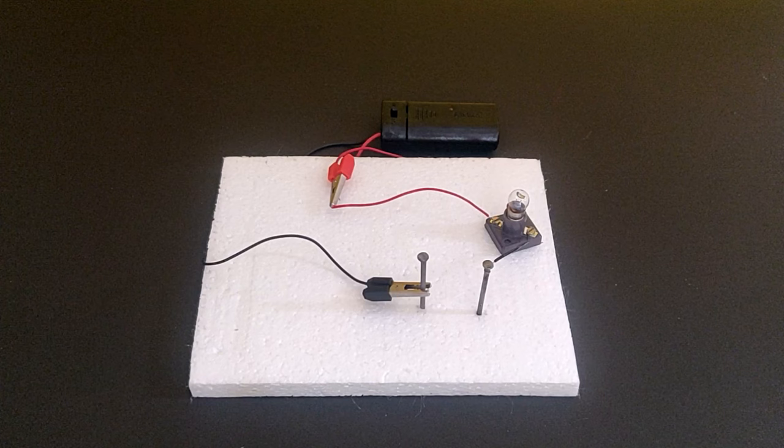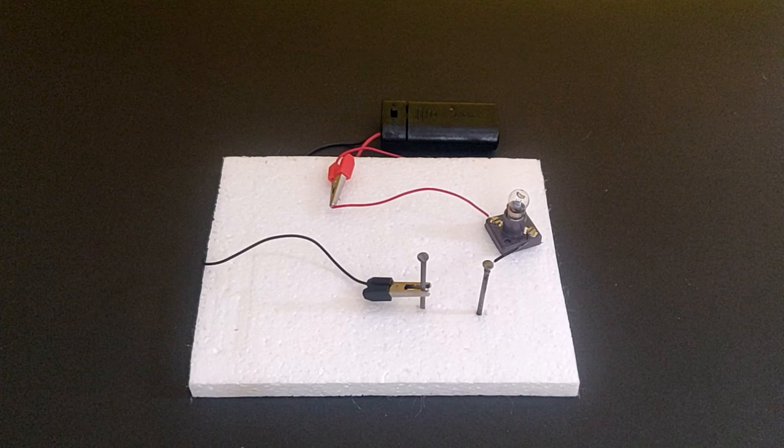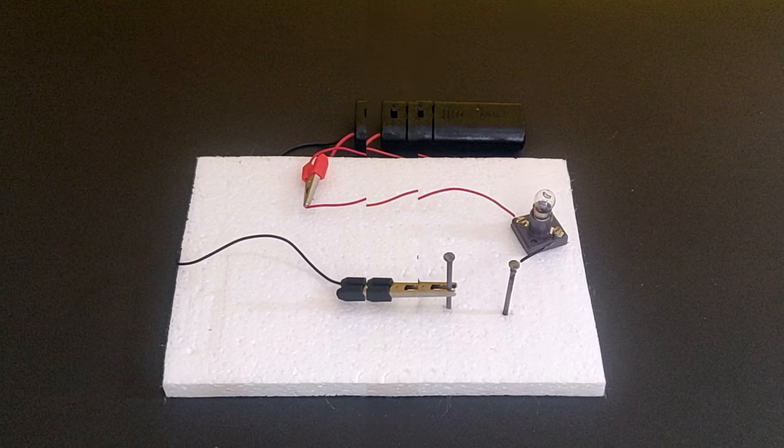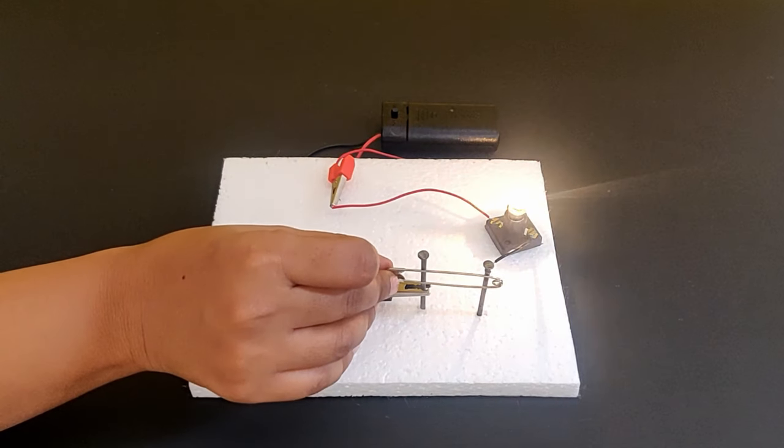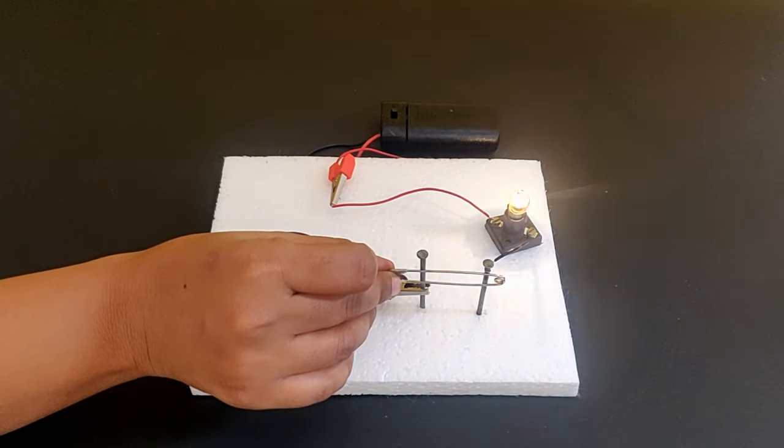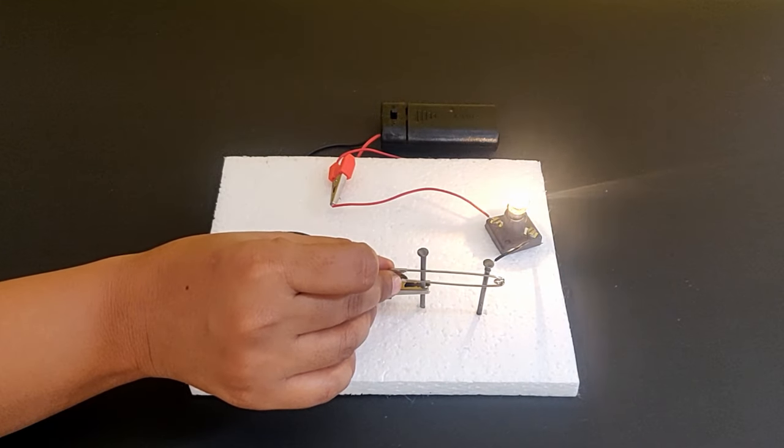You will see the bulb is not glowing because the two nails are not connected and hence the circuit is not closed. We will bridge the gap between the nails using a safety pin and check if the torch bulb glows if we do so.